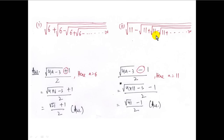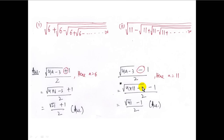In the second case — root over of 11 minus root over of 11 plus minus plus minus up to infinity — the first symbol is negative, so minus 1 is used instead of plus 1. The answer comes to root over of (4 into 11 minus 3) minus 1 upon 2, which gives root over 41 minus 1 upon 2.